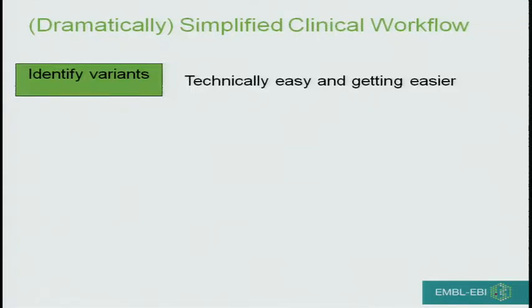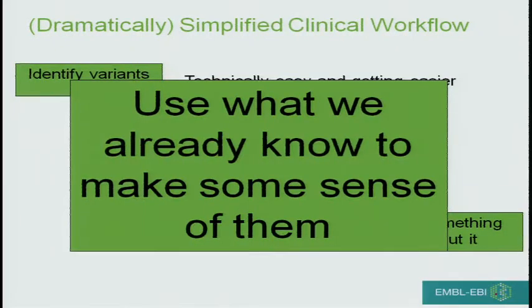I'm going to give my very simplified view of what we have here — the dramatically simplified clinical workflow and what I'm going to focus on. First: identify variants. This is technically easy and getting easier. Second: use what we already know to make sense of them — this is about the best we can do right now, using previous studies, algorithmic things. And then do something about it, which I'm definitely not involved in. But that center part — using what we already know to make sense of variants — is where database integration and the resources at the EBI can be useful.